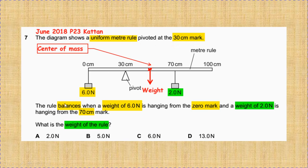Also balances, weight of 6 newtons, the zero mark, the weight of 2 newtons, the 70 centimeters, and the weight of the rule. Actually, the weight of the rule is acting at the center of mass.